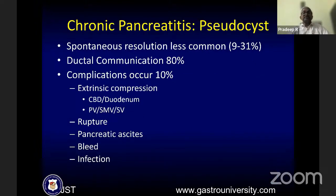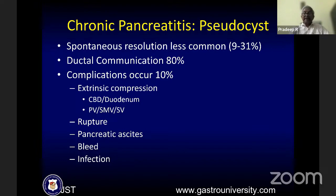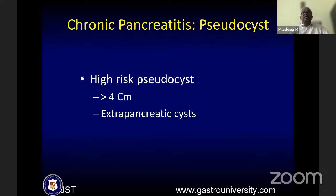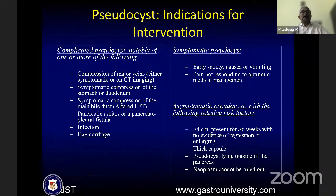Another complication is pseudocyst. About 9 to 30% have spontaneous resolution, but this is less common compared to acute pancreatitis pseudocysts because most will have a ductal communication, and they have complications in around 10%. The cyst can produce compression of the CBD or duodenum, involve the mesenteric venous system, or rupture causing pancreatic ascites, bleeding, or infection. High-risk pseudocysts greater than 4 centimeters or extra-pancreatic cysts should be treated.